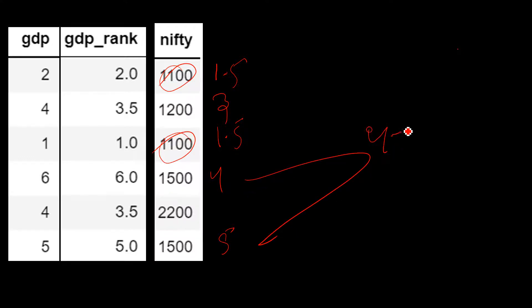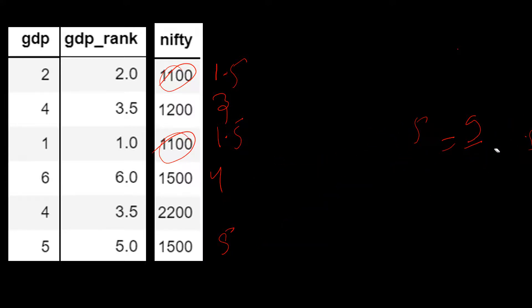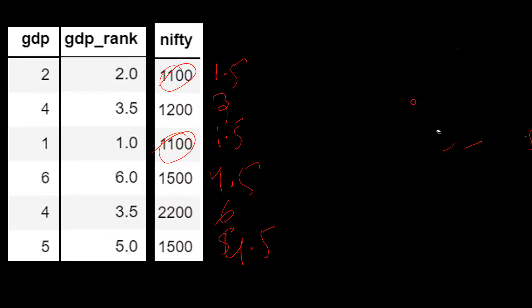What ranking do we give to 1200? Not rank two, because two is already consumed. So we say rank three, then rank four, then rank five — but again two values fight. We take four plus five divided by two, which is nine divided by two, which is 4.5. So both get rank 4.5, and the last value gets rank six.